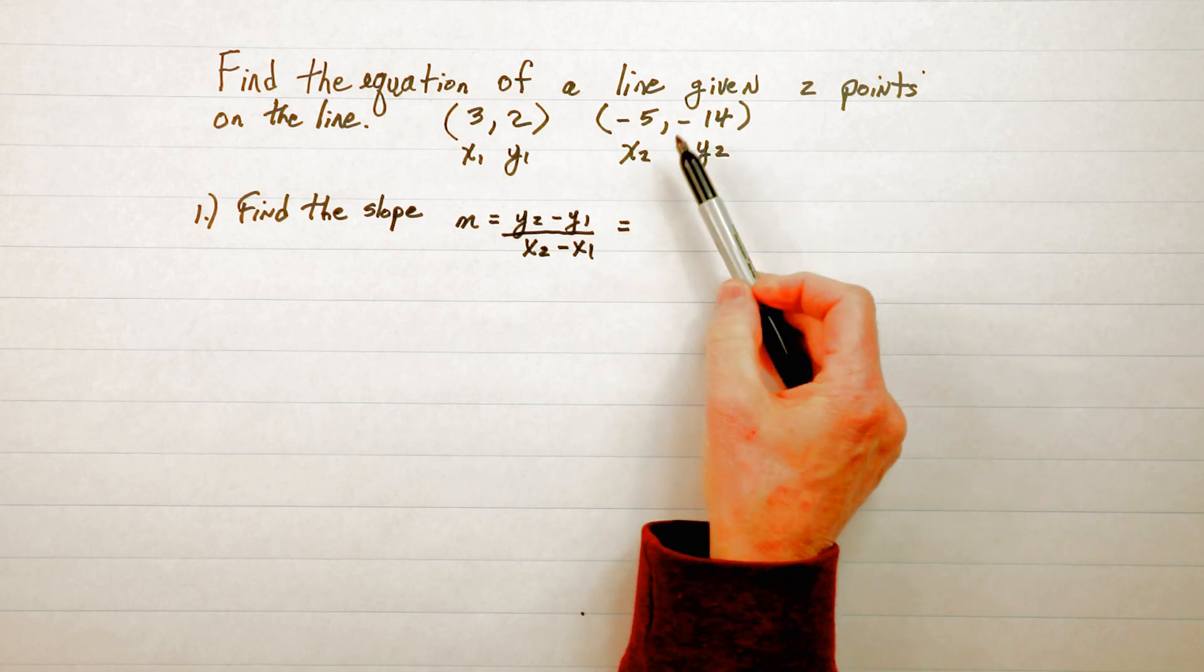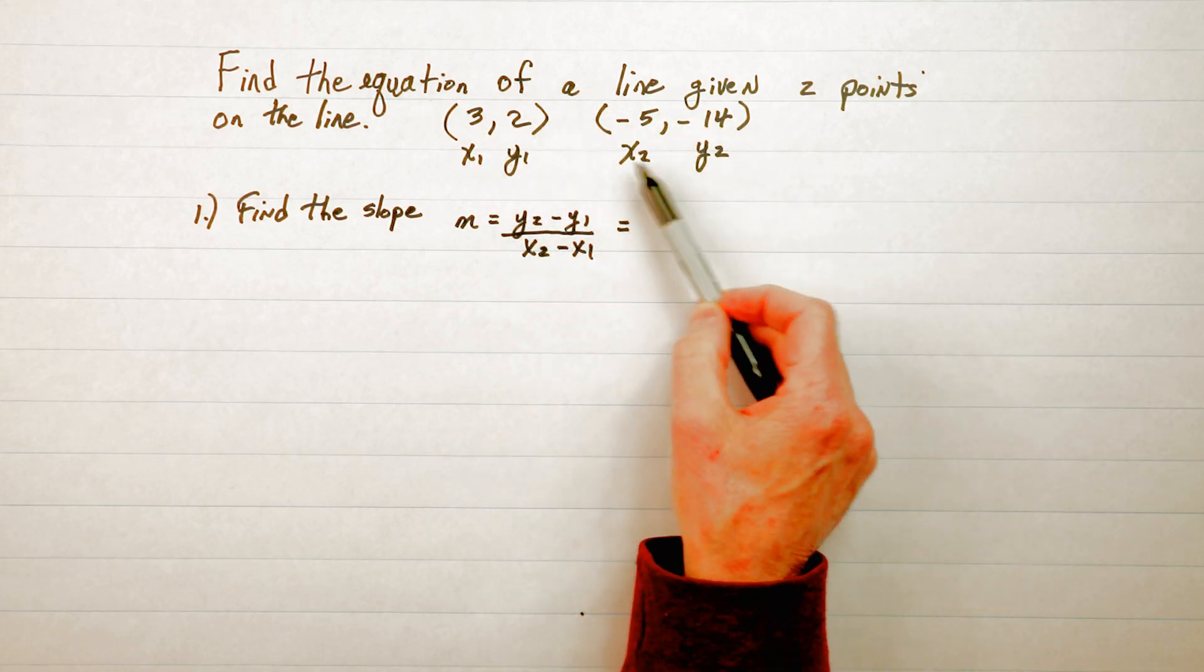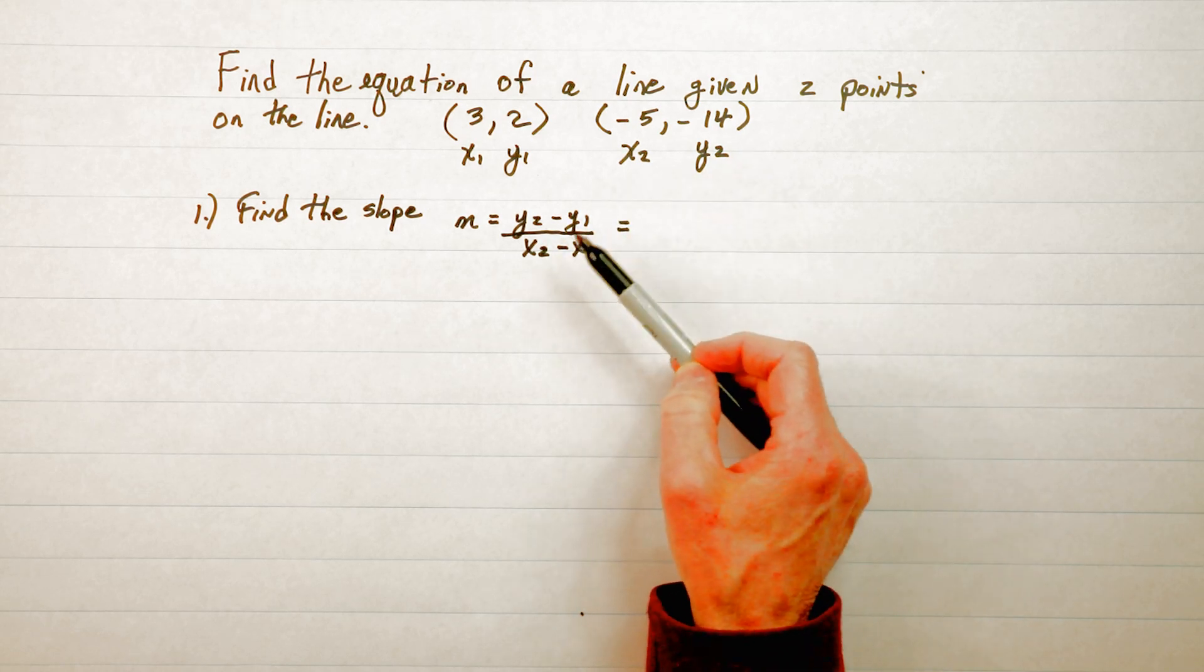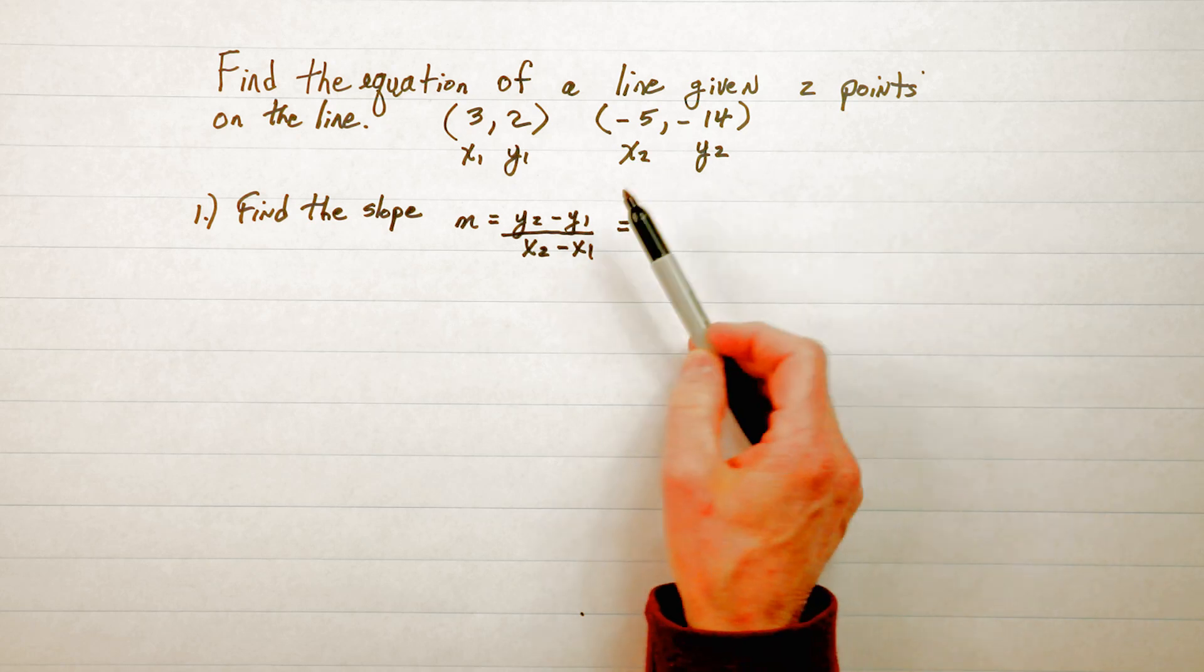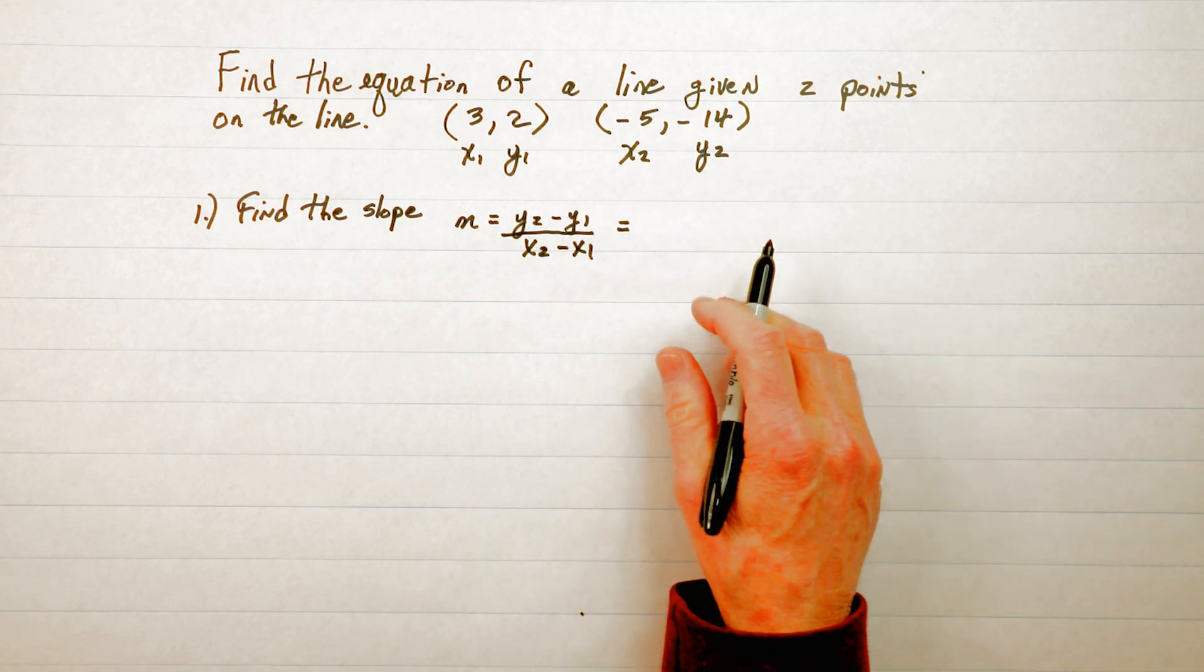So now you can see why I've named these points up here, these numbers x₁, y₁, x₂, y₂, because we need to put them in the formula in the right place. If we put them in the wrong place we're going to get a wrong answer.